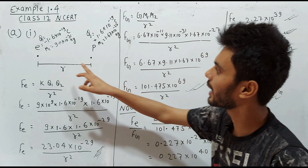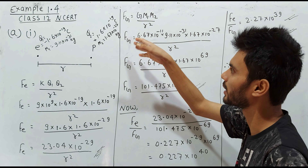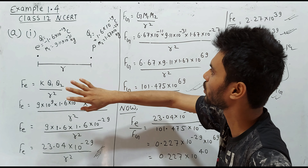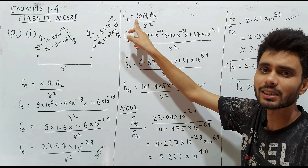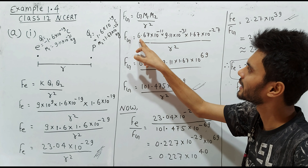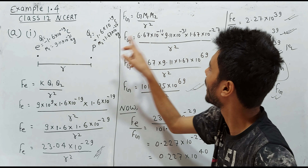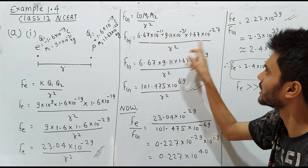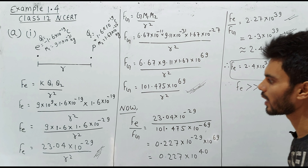Next, we calculate the gravitational force between the electron and the proton. The formula, which we studied in Class 9 and Class 11, is: Fg = G·m1·m2 / r², where G is the universal gravitational constant equal to 6.67×10⁻¹¹, m1 is the mass of the electron, m2 is the mass of the proton, and r is the distance between them.